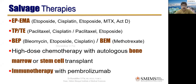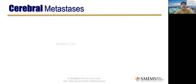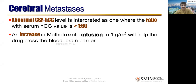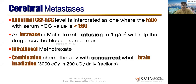For cerebral metastases, abnormal CSF hCG is interpreted as a serum-to-CSF hCG ratio of more than 1:60 (very high CSF hCG). Options include increasing methotrexate infusion to 1 mg/m² to help the drug cross the blood-brain barrier, intrathecal methotrexate, or combination chemotherapy with concurrent whole brain irradiation. This is the only context where radiation is discussed for GTN — otherwise, GTN is a success story with chemotherapy alone. GTN is one of very few cancers where we speak of cure rates, not just control.